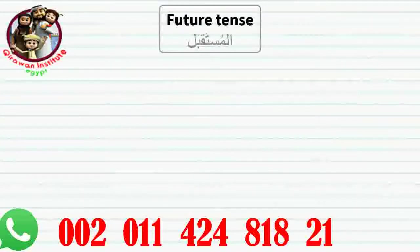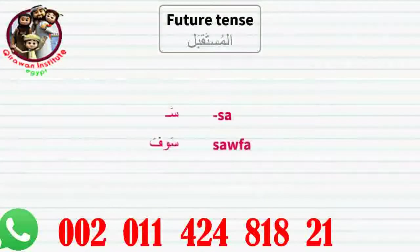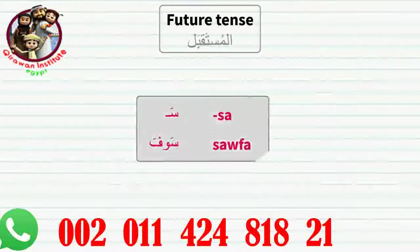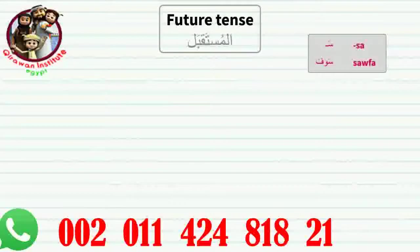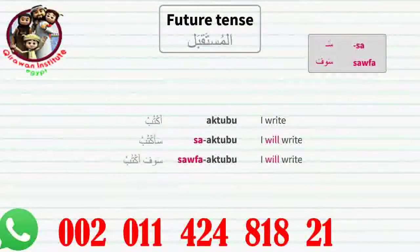Future tense — almustakbal. The future tense in Arabic is almost the same as the present tense. The only difference is adding 's-' or 'sofa' in front of the verb. For example, aktubu means 'I write,' s-aktubu means 'I will write,' sofa aktubu also means 'I will write.'